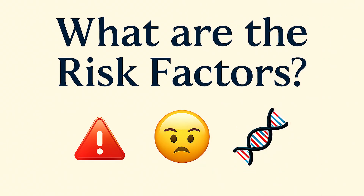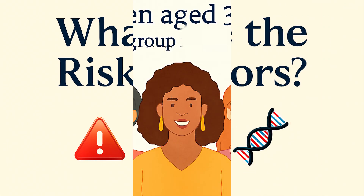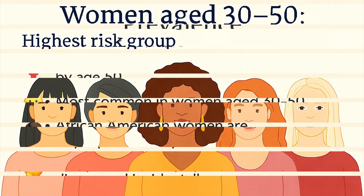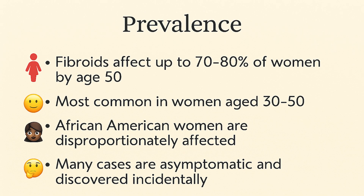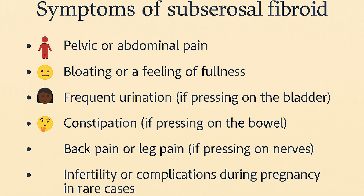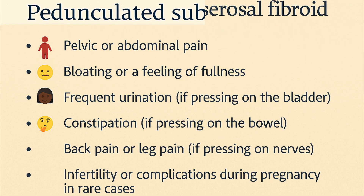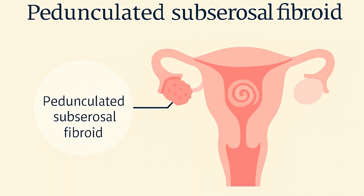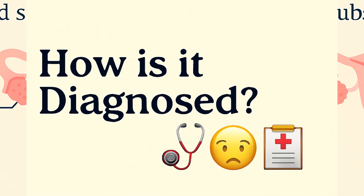Fibroids affect up to 70–80% of women by the age of 50, most commonly in women aged 30–50, with most cases in African-American women. Many cases are asymptomatic and discovered incidentally. Common signs of subserosal fibroids include pelvic pain, bloating, frequent urination, and constipation, but many women may not realize these symptoms are linked to fibroids. Pedunculated subserosal fibroids, which are attached by a stalk, can twist, causing sudden sharp pain that may require urgent care.